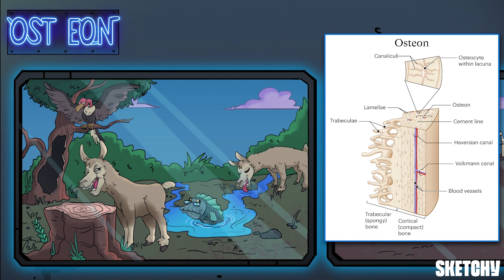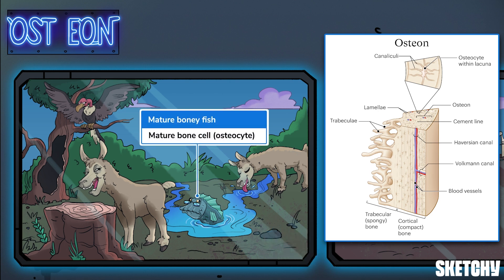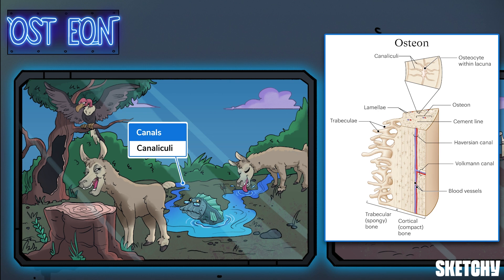The tiny spaces between the lamellae are called lacunae, which is why we've added a lagoon between the two llamas. The very mature bony fish living inside that lagoon represents the mature bone cells, or osteocytes, that live within lacunae. The lagoon is fed by small canals because many canals called canaliculi transport nutrients and waste to and from osteocytes in the lacunae. The canaliculi enable this transport by connecting osteocytes to the larger Haversian and Volkmann's canals.